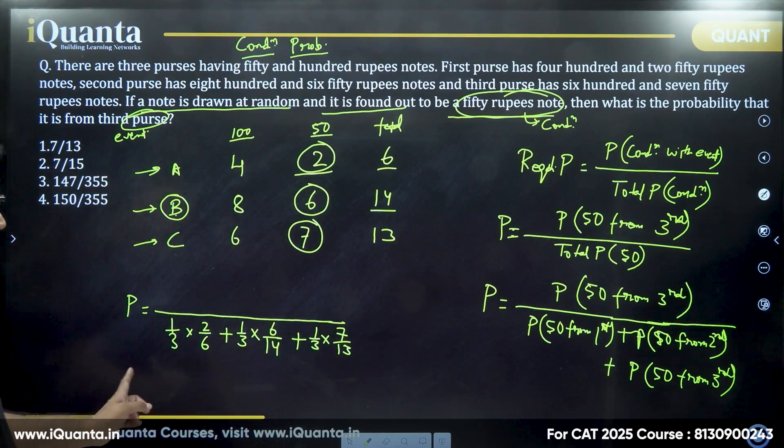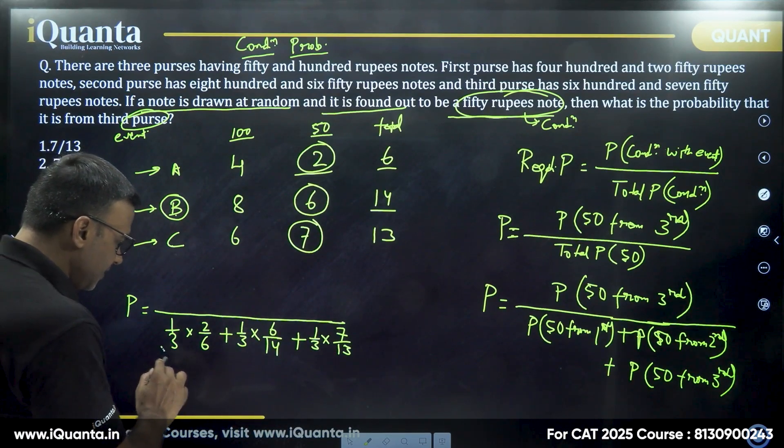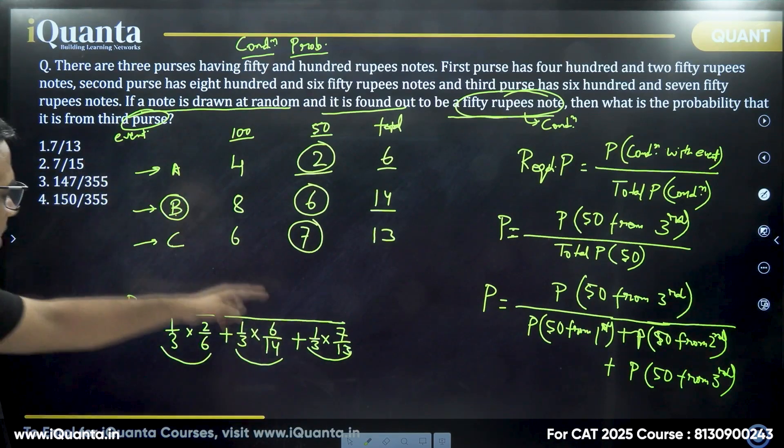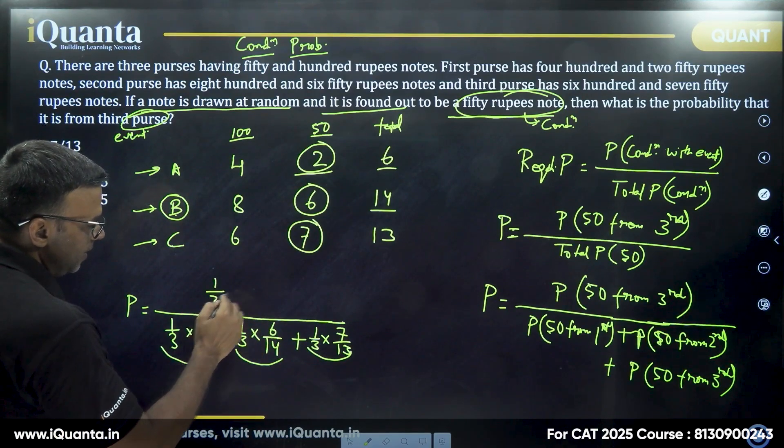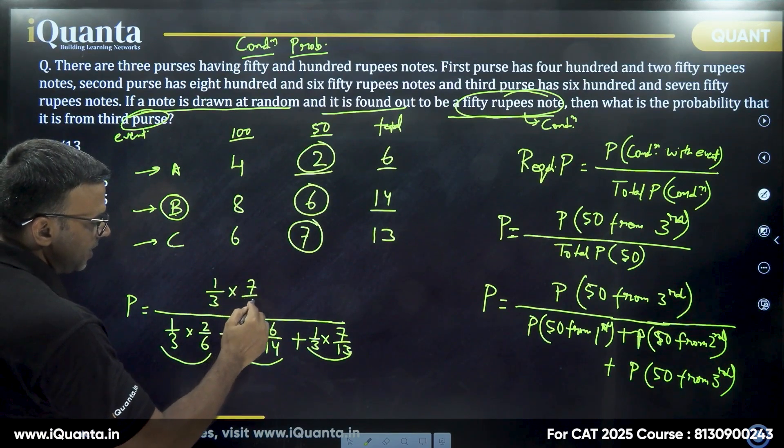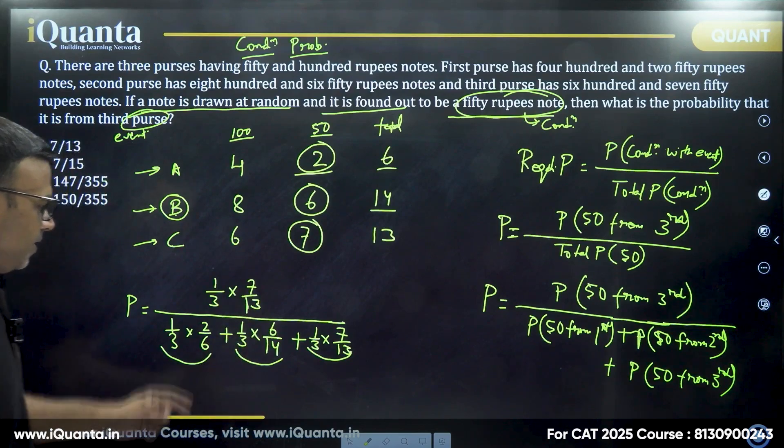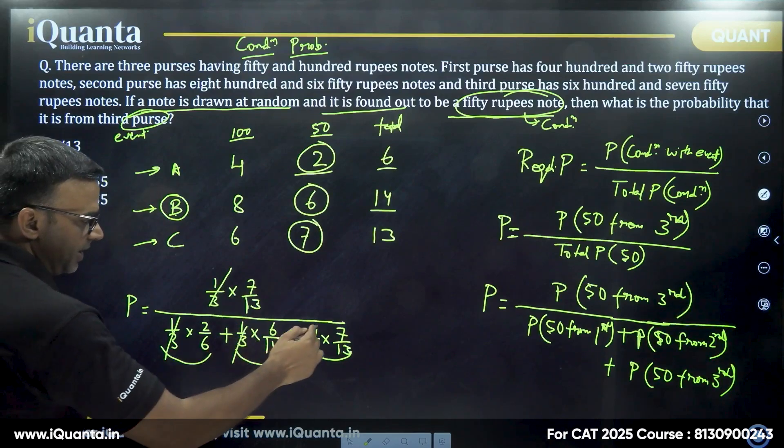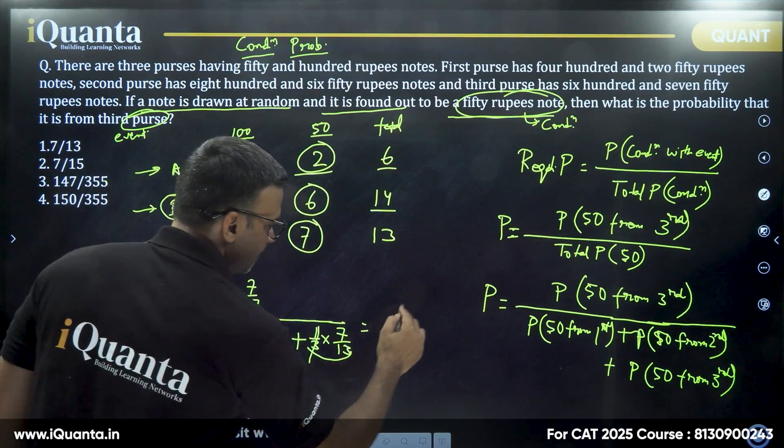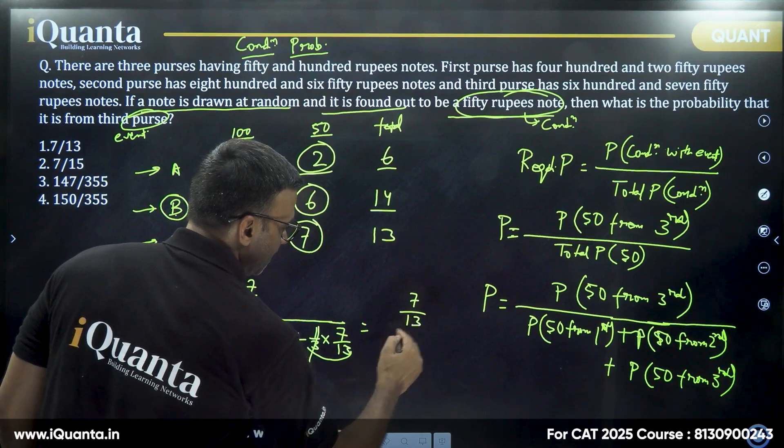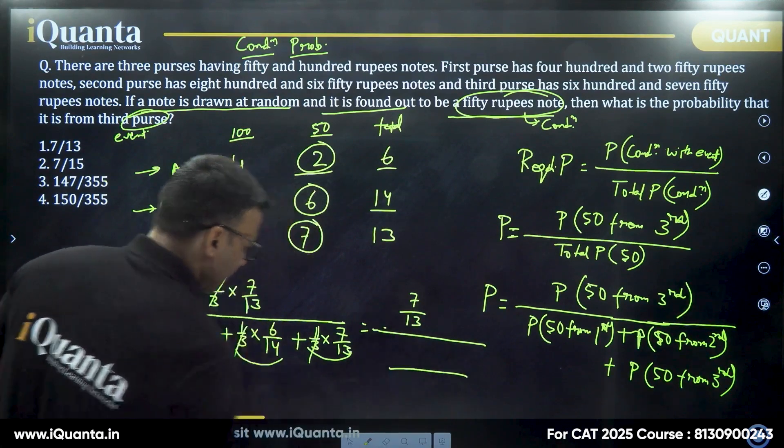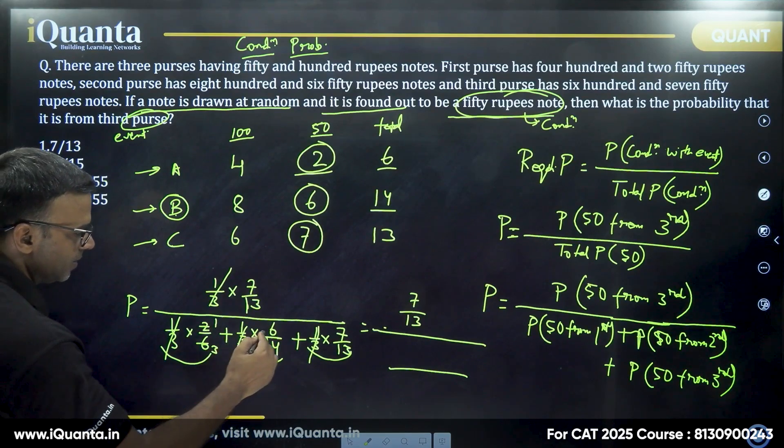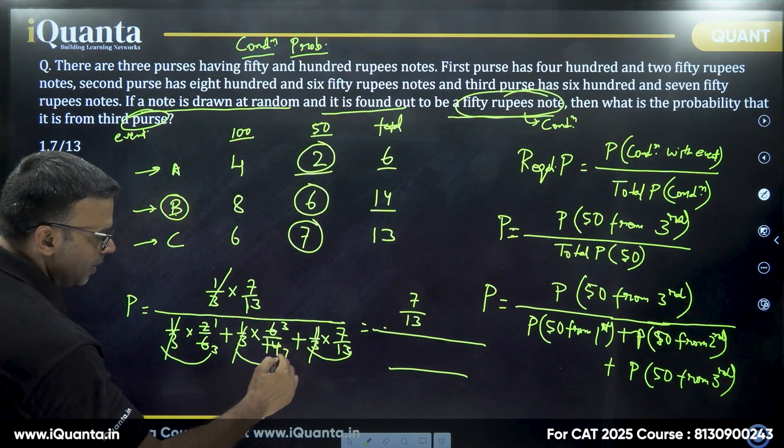Now these are the three cases of getting a 50 rupee note in the end. One of these cases, that is the third purse, this will come in numerator. So one by three into seven by 13. Now just carefully simplify. One by three is common and cancel. This one by three, one by three common and cancel. Now simplify carefully. I'll write it as seven by 13. And here I'll take LCM of six. Oh, first of all, this two by six is one by three.